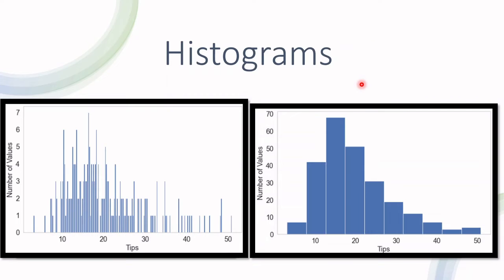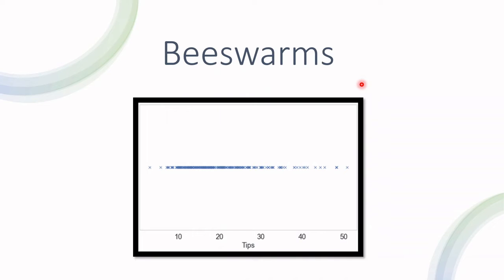Going back to the initial plot that we saw, what beeswarm plots do is instead of dividing it and counting the instances where the area is more dense, they simply move to the side because the y-axis here really doesn't matter. You can move the instances right to left.